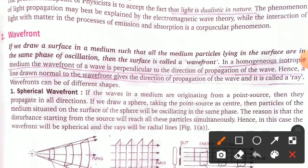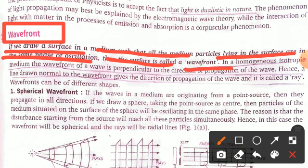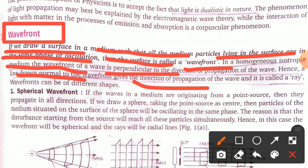Now we will discuss the wavefront, which is the important one. If we draw a surface in a medium such that all the medium particles lying on that surface are in the same phase of oscillation, then the surface is called a wavefront. In a homogeneous isotropic medium, the wavefront of a wave is perpendicular to the direction of propagation. The line drawn normal to the wavefront gives the direction of propagation of the wave and is called a ray.